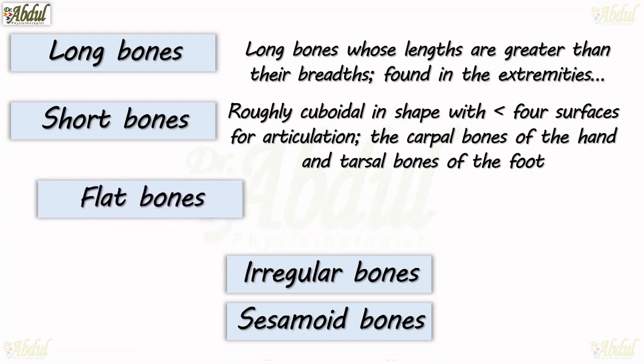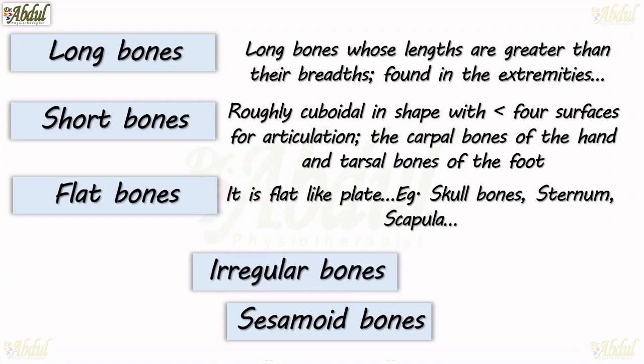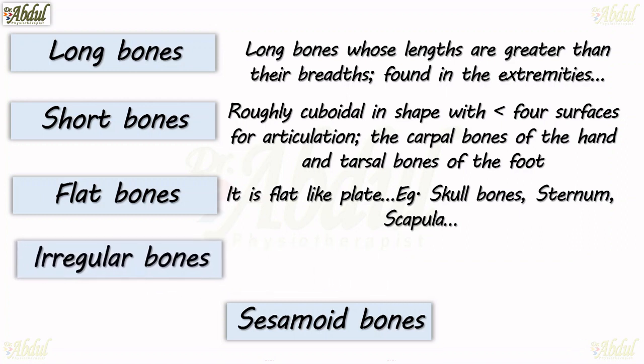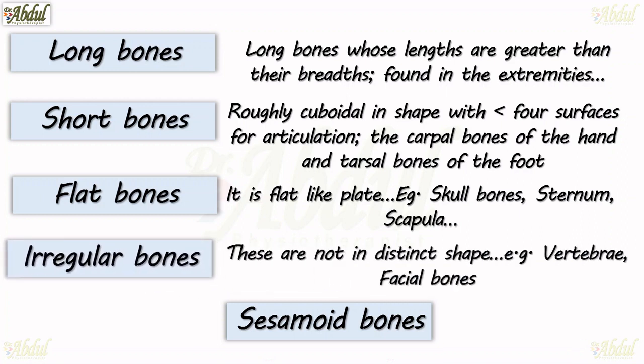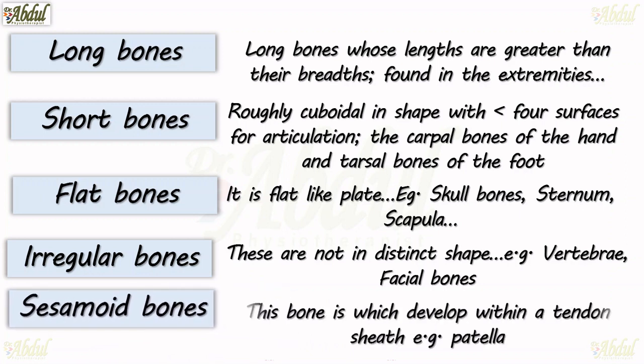Flat bones. These are flat like a plate. Examples: skull bones, sternum, scapula. Irregular bones. These are not in a distinct shape, that's why they are called irregular bones. Examples: vertebrae, facial bones. Sesamoid bones. This bone is actually developed within a tendon sheath. Example: patella. That's why it is called a sesamoid bone.